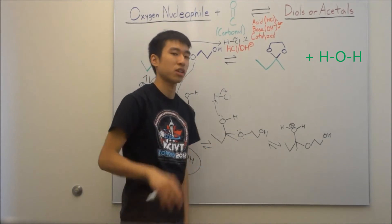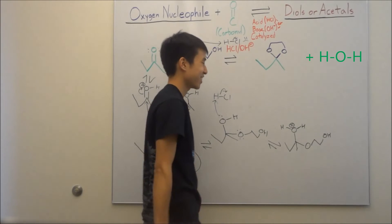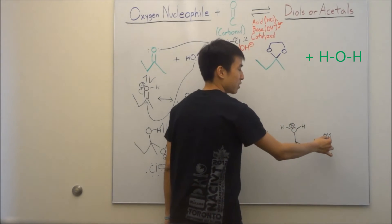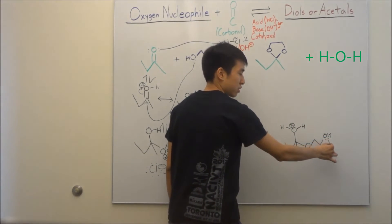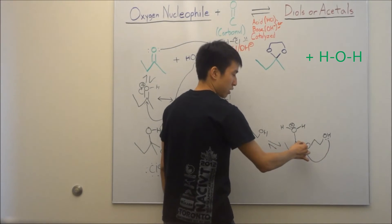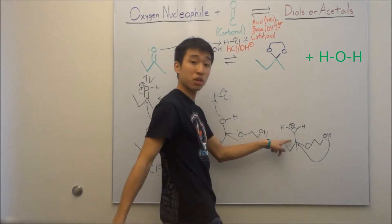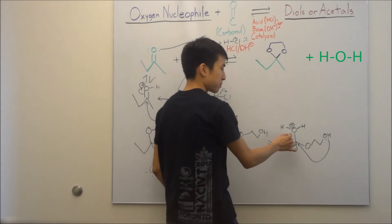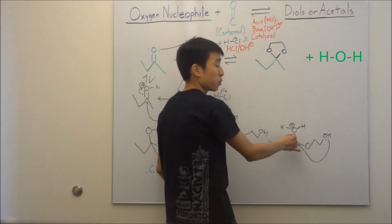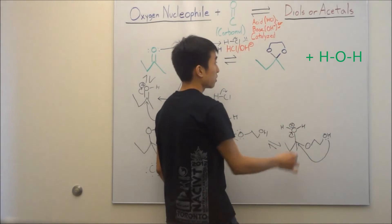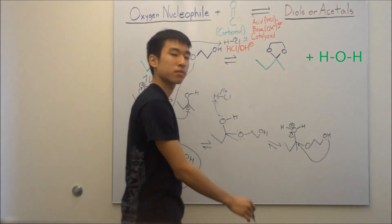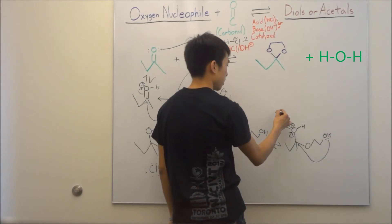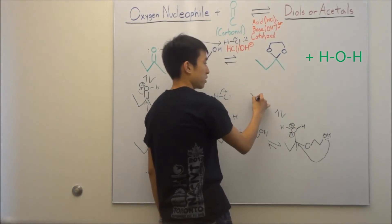Now it's a better leaving group. So we can use the electrons on the other diol oxygen to attack the carbon right here, and then the water molecule will just leave. When water leaves, you're going to get this product.